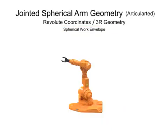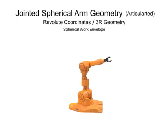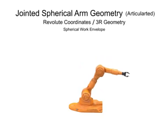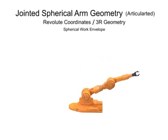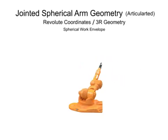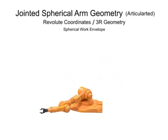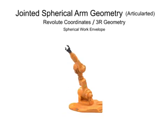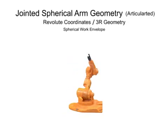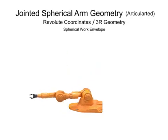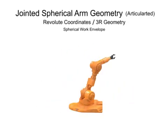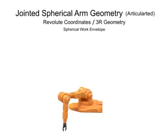The advantages of this type of work envelope are a robotic arm with very deep reach, minimal floor space use, and high positioning mobility of the tool-end arm. Due to its mechanical complexity and the complexity of its controller, this robotic arm typically comes with a higher hardware cost and requires skilled technicians.